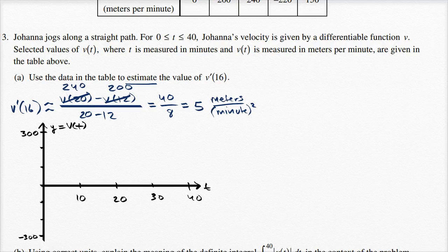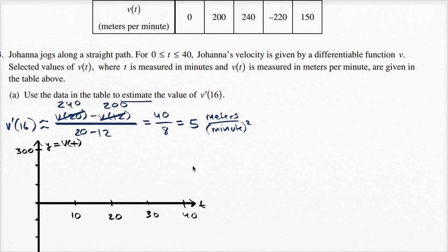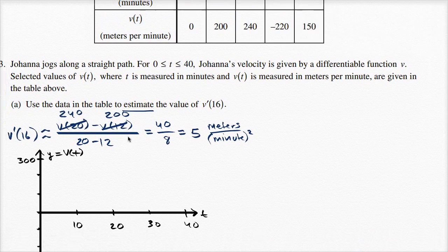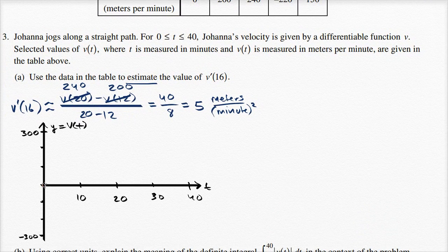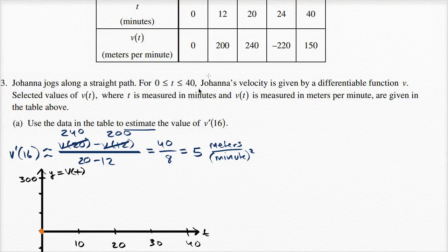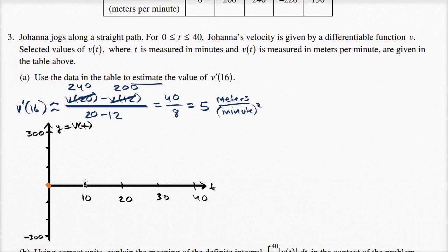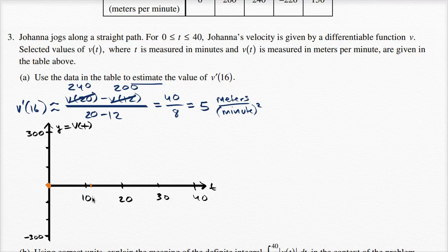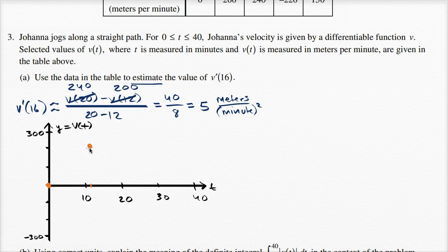And so what points do they give us? So they give us, I'll do these in orange, zero comma zero, so that is right over there. They give us, when time is 12, our velocity is 200. So when the time is 12, which is right over there, our velocity is going to be 200. So that's at that point.